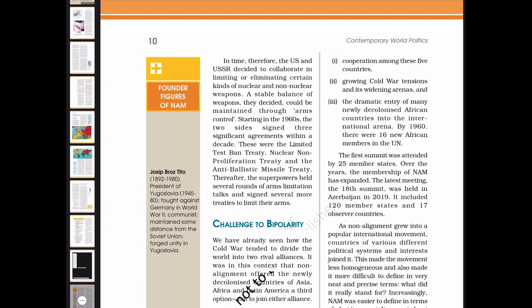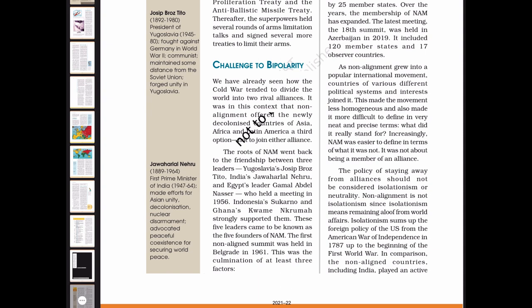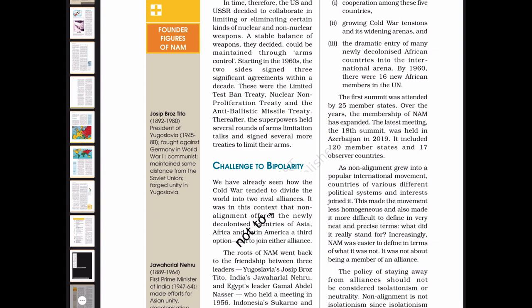We have already seen how the Cold War tended to divide the world into two rival alliances. It was in this context that non-alignment offered the newly decolonized countries of Asia, Africa, and Latin America a third option — not to join either alliance. The roots of NAM went back to the friendship between three leaders: Yugoslavia's Josip Broz Tito, India's Jawaharlal Nehru, and Egypt's Gamal Abdel Nasser, who held a meeting in 1956. Indonesia's Sukarno and Ghana's Kwame Nkrumah strongly supported them. These five leaders came to be known as the five founders of NAM. The first non-aligned summit was held in Belgrade in 1961, culminating from cooperation among these five countries, growing Cold War tensions, and the dramatic entry of many newly decolonized African countries into the international arena.